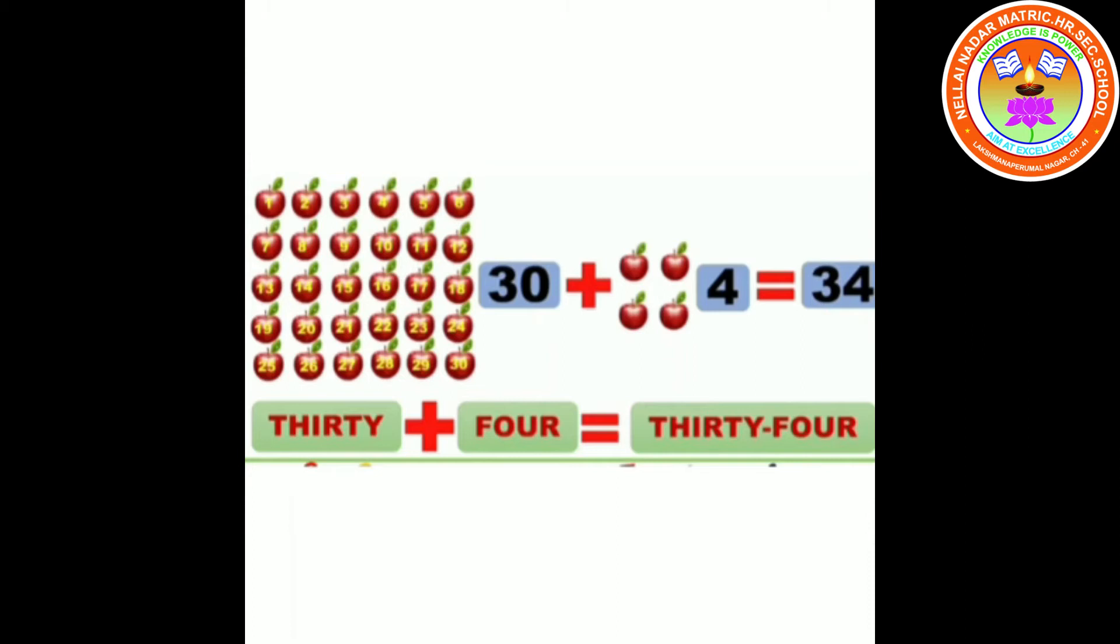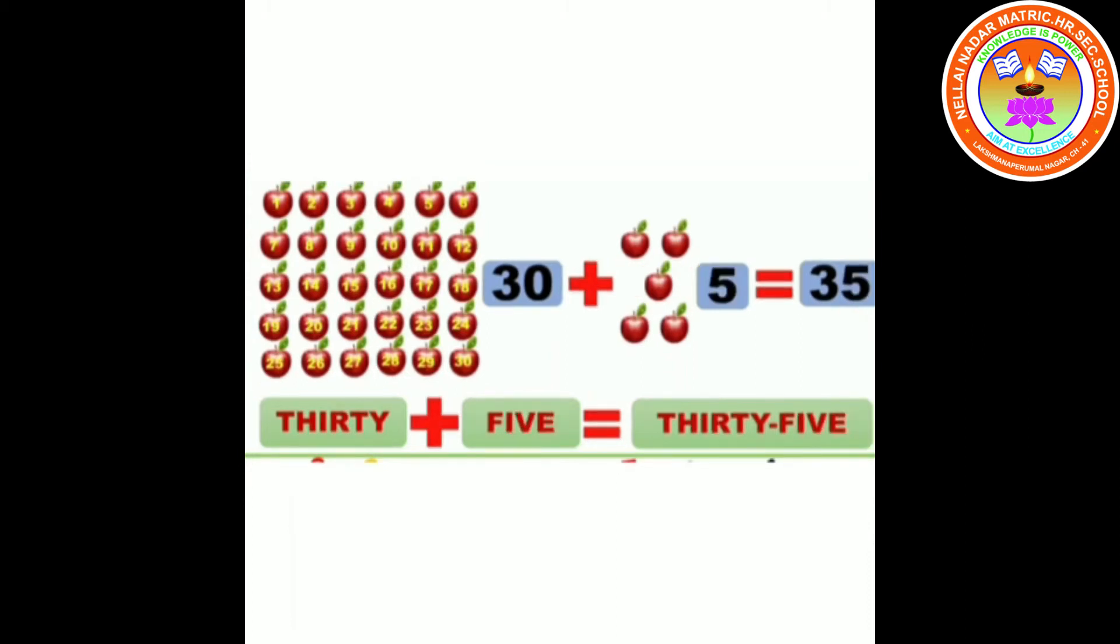35. 30 plus 5 equals 35. T-H-I-R-T-Y, thirty. F-I-V-E, five. Thirty-five.